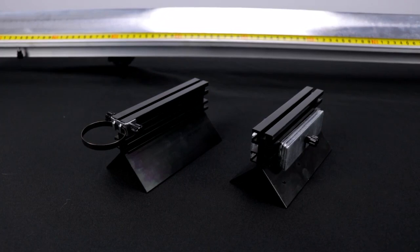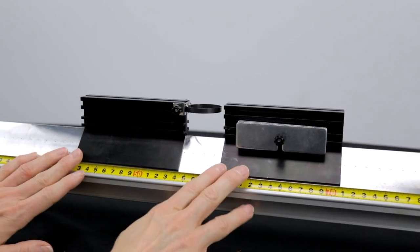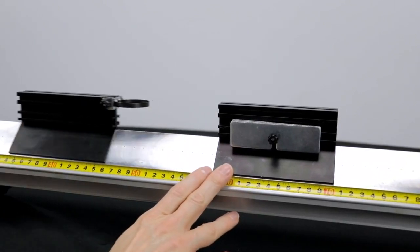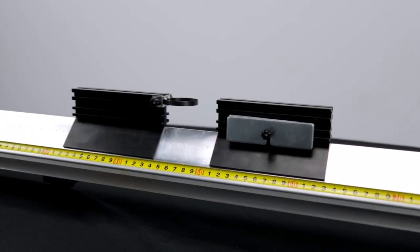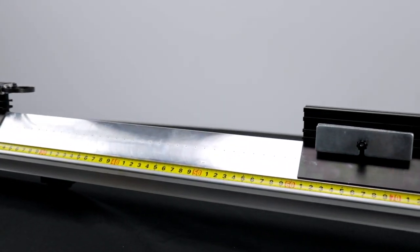For the last of our elastic collision experiments, we will use carts of differing masses. Place the more massive cart in the middle of the track. Give the smaller cart a velocity away from the first, so it bounces off the end bumper. What do you notice about the velocities for both carts after they collide?